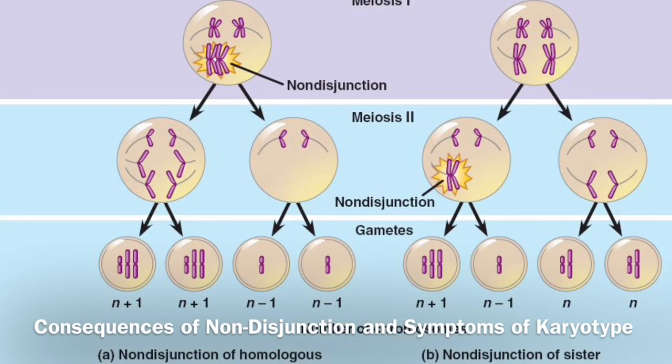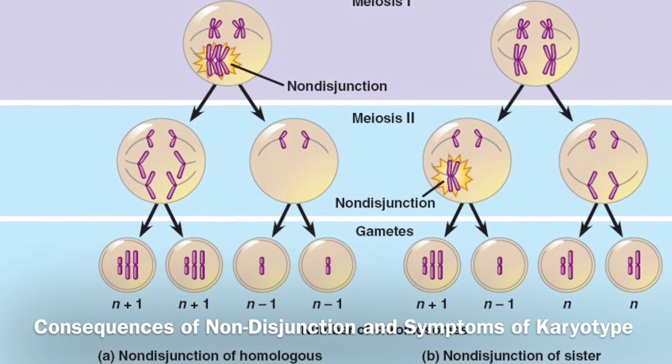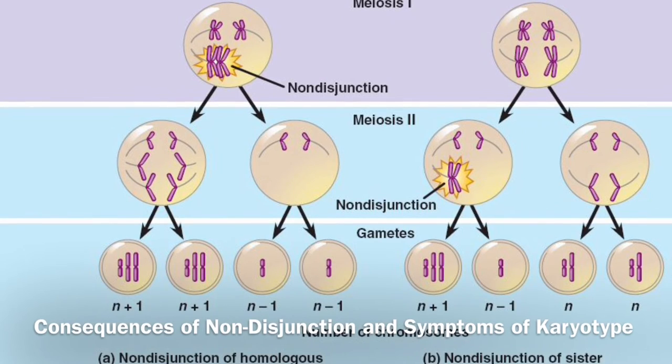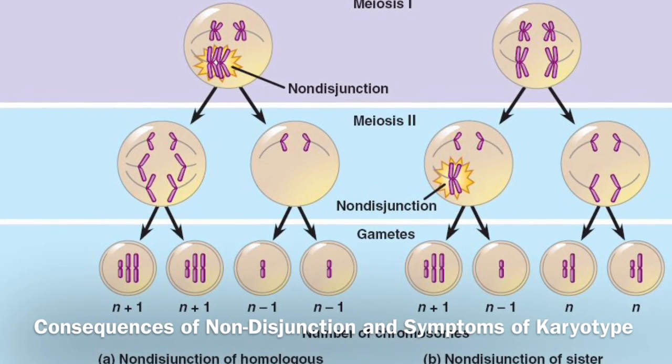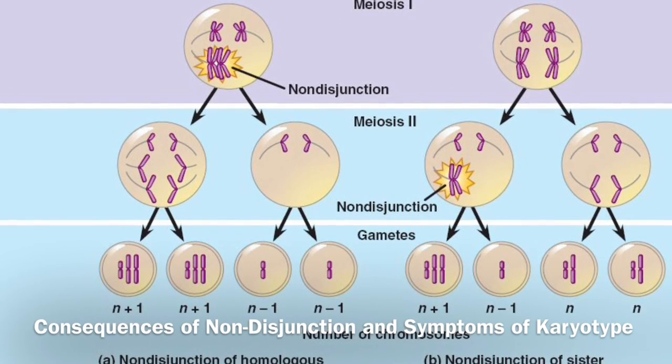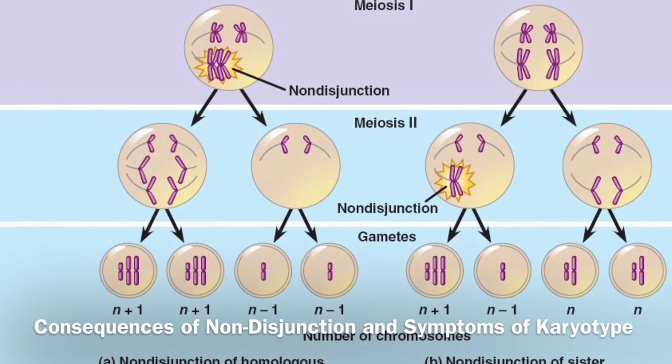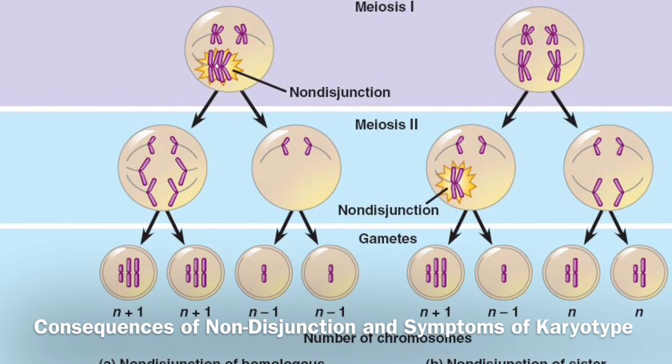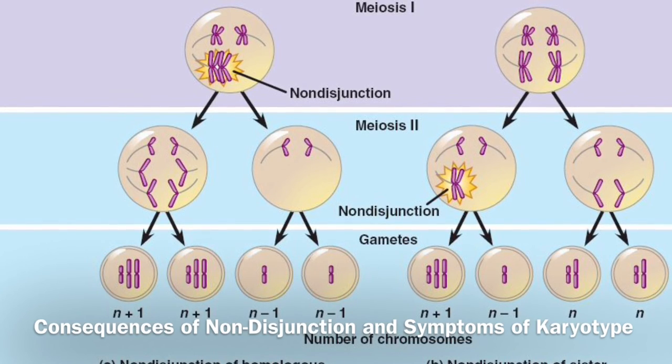This causes physical and mental developmental delays and disabilities. Some of the symptoms of our karyotype include decreased or poor muscle tone, short neck, small head, ears and mouth, and wide short hands with short fingers.